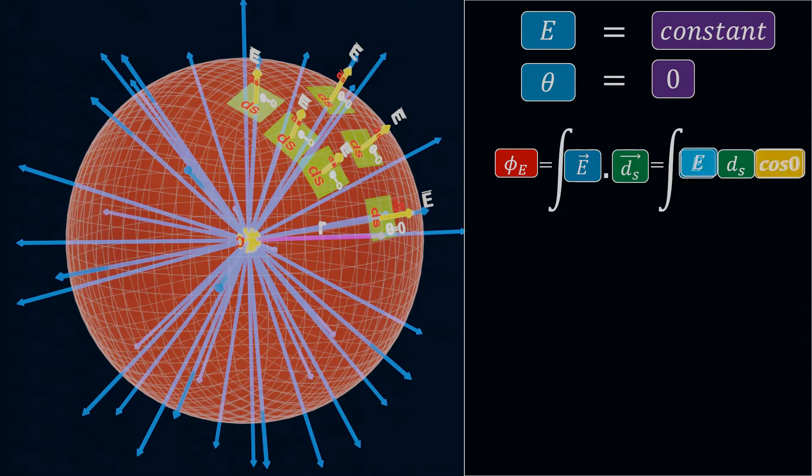So we can simply take cos 0 and the electric field E outside the integration. In the case of a complete integration over the spherical surface, it will become 4π r². And the value of cos 0 is 1. We already know that the electric field is equal to 1 upon 4π epsilon naught multiplied by Q divided by r².